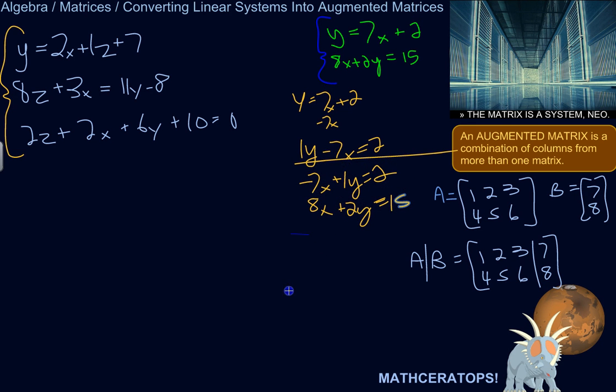Let's write the augmented matrix. This is called the coefficient matrix over on this side because it's the coefficients of the variables. Let's write the coefficients in the order in which they appear: negative 7, 1, 8, 2. And then the constant matrix, we've got 2, 15.